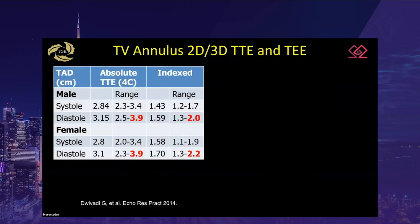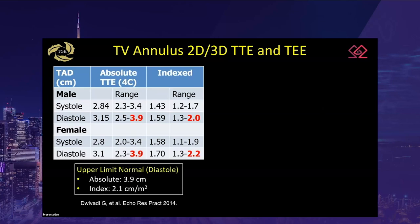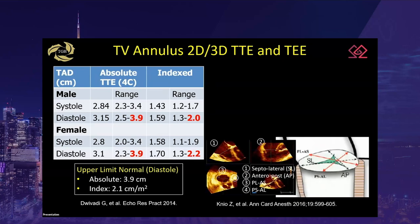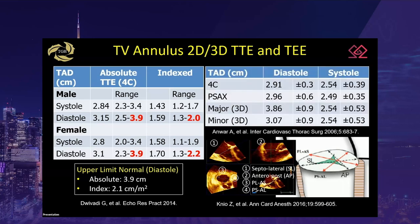Current guidelines recommend measuring the tricuspid annulus in diastole from the 2D apical 4-chamber view. Normal tricuspid valve annulus diameter in adults is 28 millimeters, with significant tricuspid annular dilatation defined by a diastolic diameter greater than 39 millimeters or 2.1 centimeters per meter squared. 3D echocardiography provides a more robust method to evaluate dimensions and geometric changes over the cardiac cycle, with the maximum dimensional change occurring along the posterolateral-anteroseptal axis at end diastole, which 2D imaging cannot reliably measure.